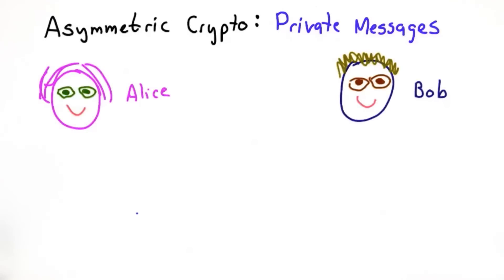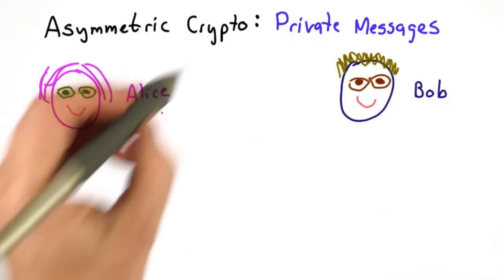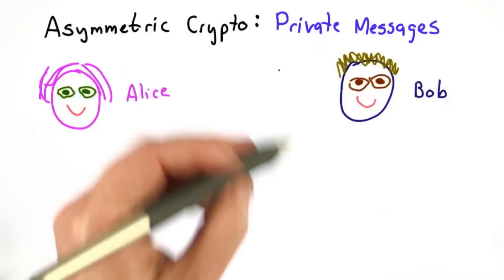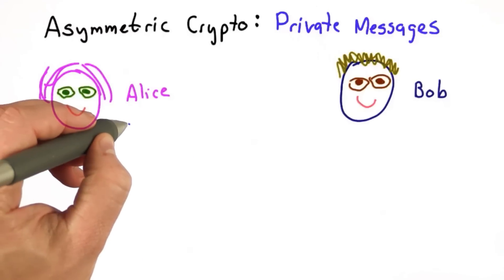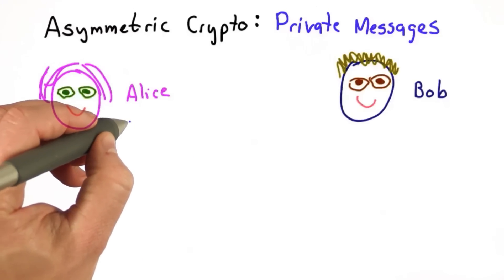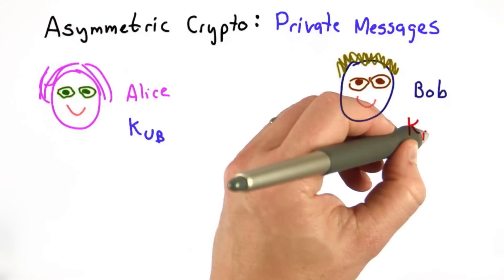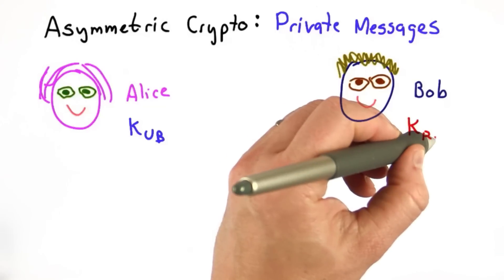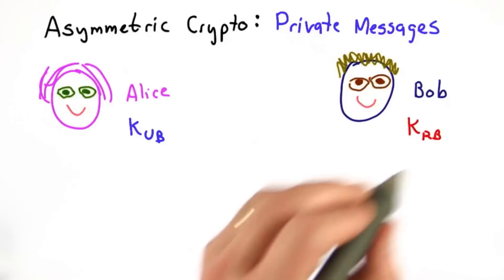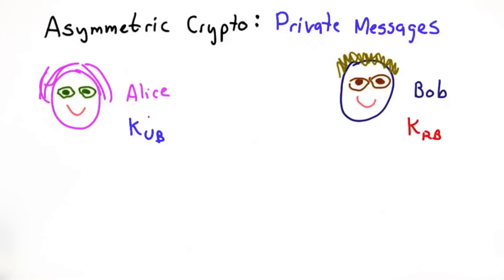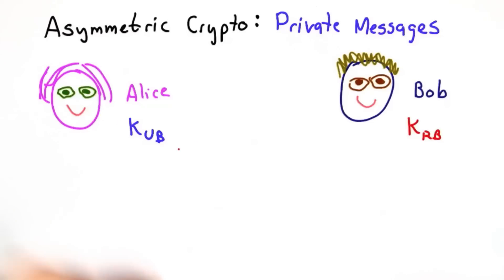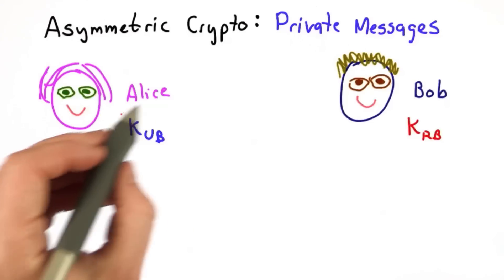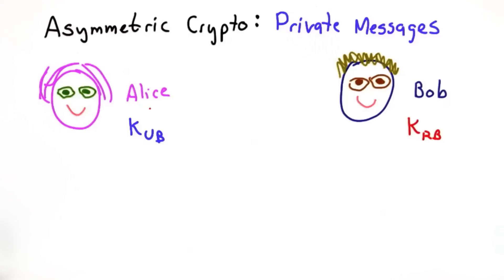Let's assume Alice wants to send a private message to Bob. She doesn't have a secure channel, and she doesn't have a key shared with Bob. But she does know Bob's public key — we'll call that KUB. Bob knows his private key that corresponds to the public key that Alice, as well as anyone else who wants to know, knows is associated with Bob.